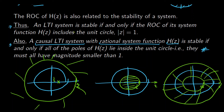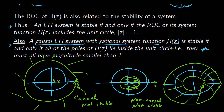The ROC can take three forms. First, if the ROC is outward of the outermost pole (|z| > 2), the system is causal but the ROC does not cover the unit circle, so it is not stable. Second, if the ROC is inward of the innermost pole (|z| < 1/2), the system is anti-causal (non-causal) and does not cover the unit circle — also not stable. Third, if the ROC is the annular ring (1/2 < |z| < 2), the system is not causal, but the unit circle is covered, so it is stable.